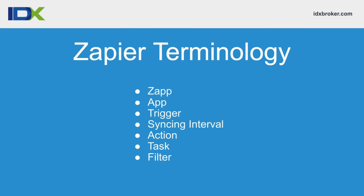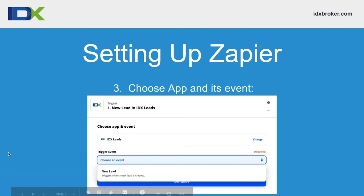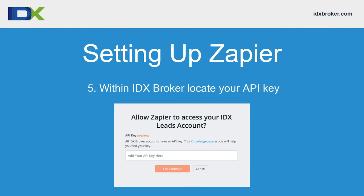Now let's walk through what it looks like to set up a Zap. After creating an account in Zapier, you'll see a plus sign in the upper left. Selecting it brings up the screen to choose a trigger event. Search for IDX Leads — that's what it's called within Zapier. After selecting IDX Leads, the trigger event is "New Lead," so every time a lead signs up it will trigger the action. It will then ask for your IDX Broker API key, which you can find in the IDX Broker dashboard under Home > Access Control. This is very much a point-and-click application, which makes it easy.